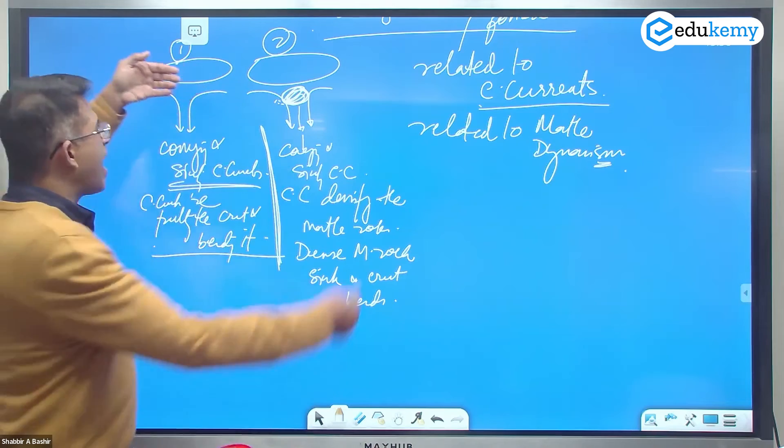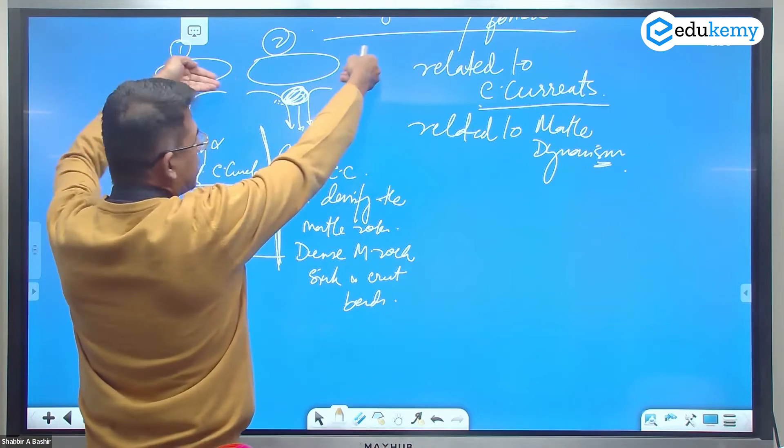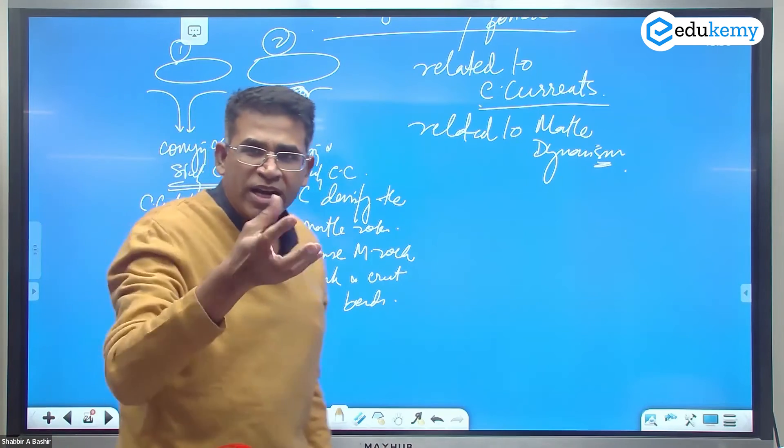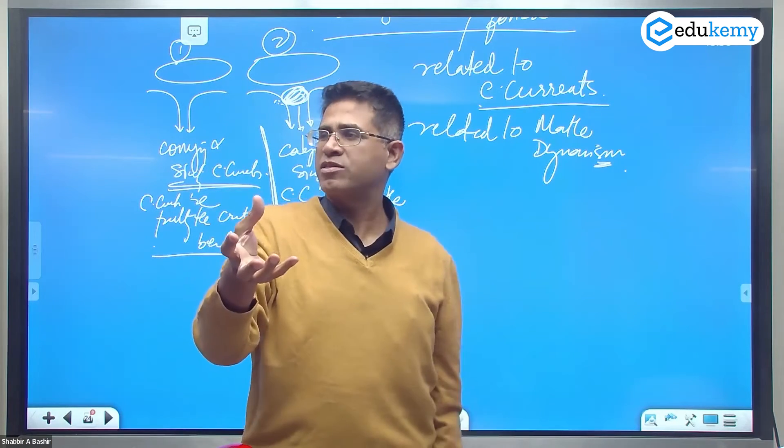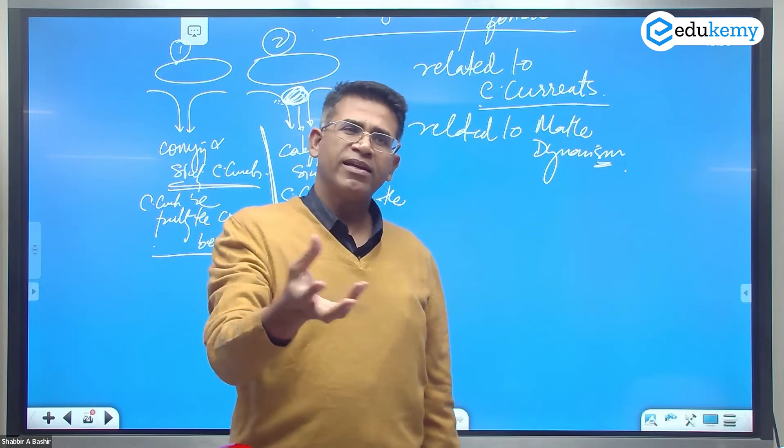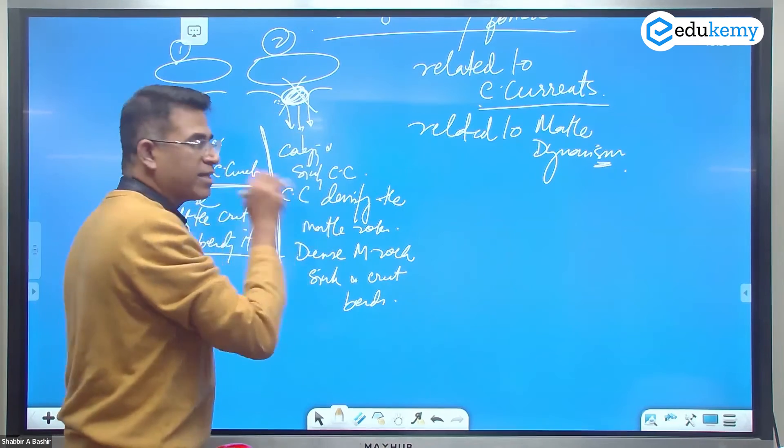Because when actually compression happens, it will melt and molten rocks are not dense. So it will be lighter. Right? The assumption is wrong, but he says like this.